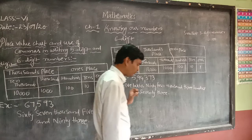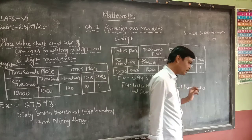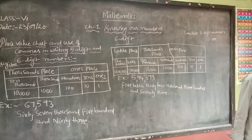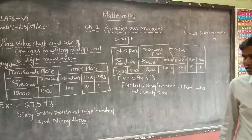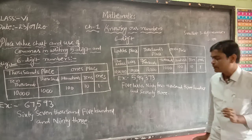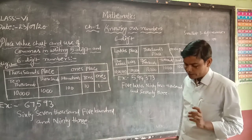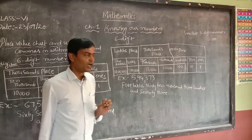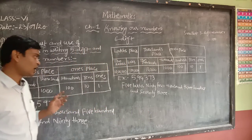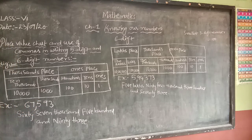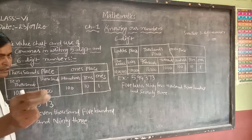So we have discussed how to write five-digit and six-digit numbers, their place values, and how to keep the commas. That is what we studied so far.